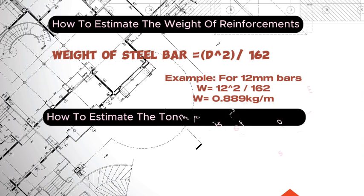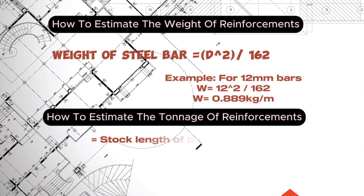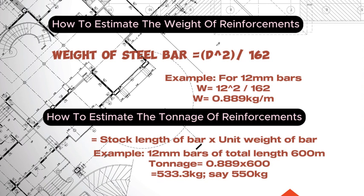To estimate the tonnage of your reinforcement, this is a product of the stock length of bar and the unit weight of steel. For example, for 12 mm bars of total length 600 meters, the tonnage would be 0.889 multiplied by 600 meters, which gives 533.3 kilograms. For proper measurement we would round this to 550 kilograms.